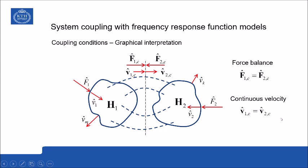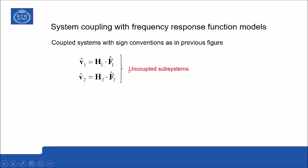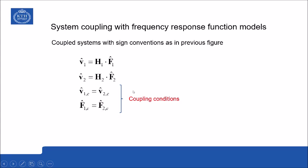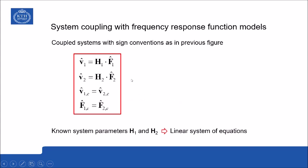To summarize the coupling conditions: we start with the equations characterizing the uncoupled subsystems, then introduce the coupling conditions. Together, with known system parameters h1 and h2, these equations form a linear system. If the external forces are known, this linear system can be solved for the unknown coupling velocities and coupling forces.